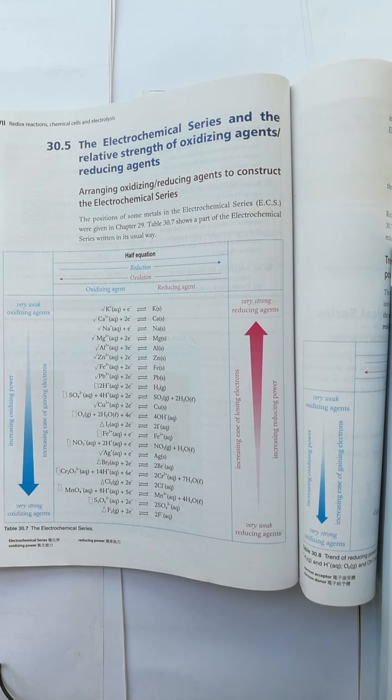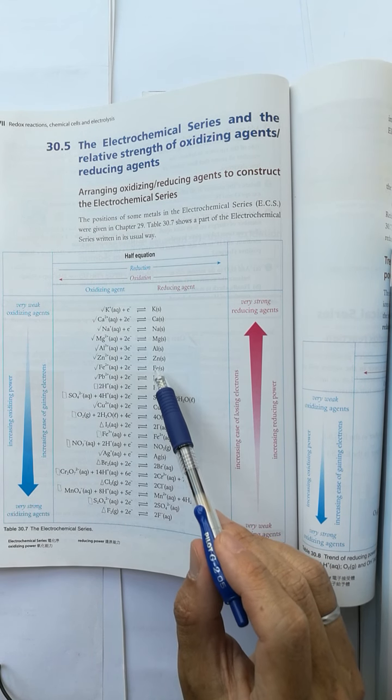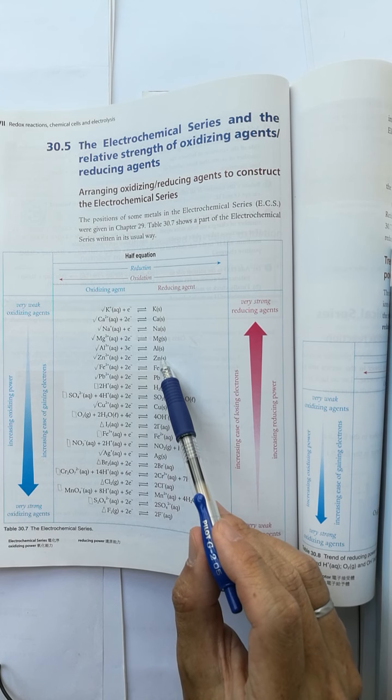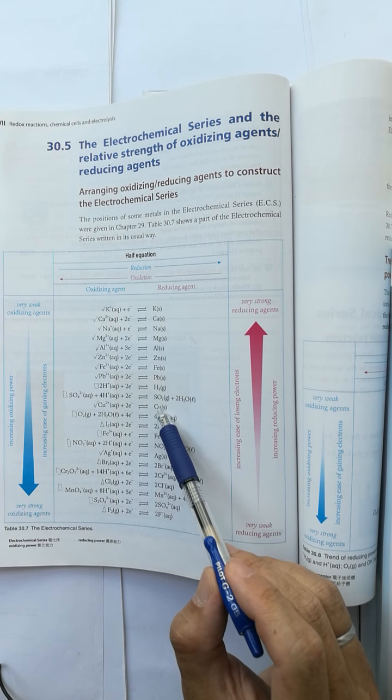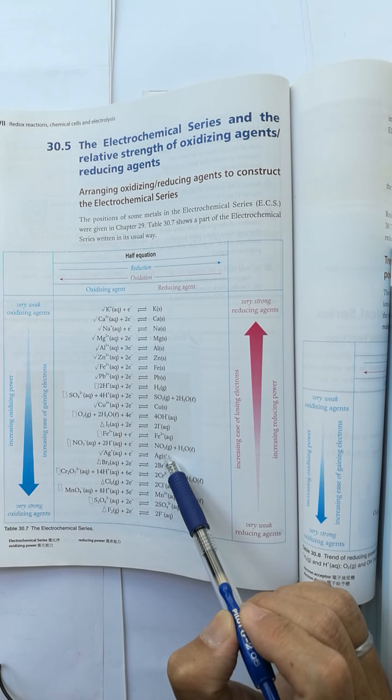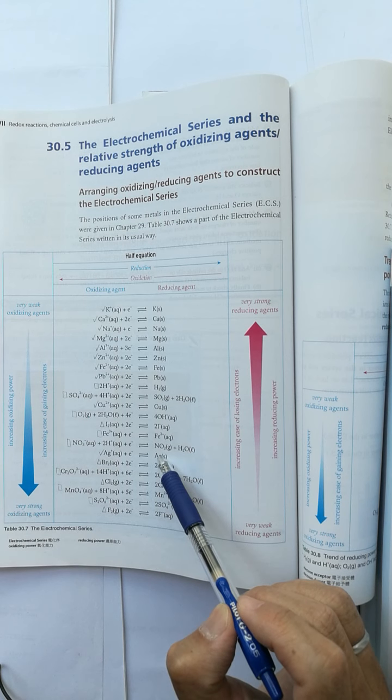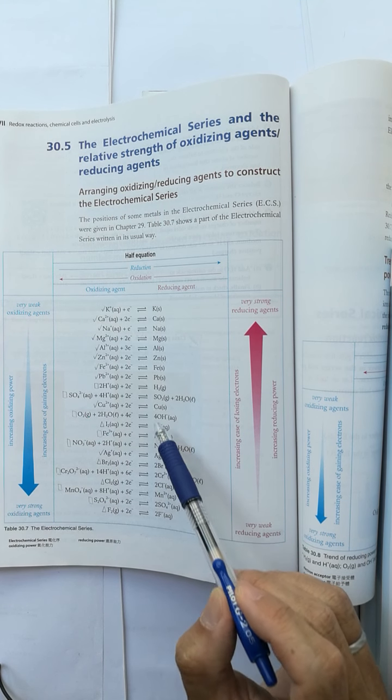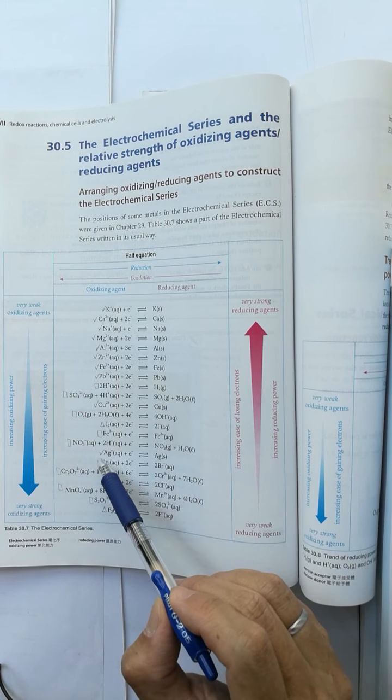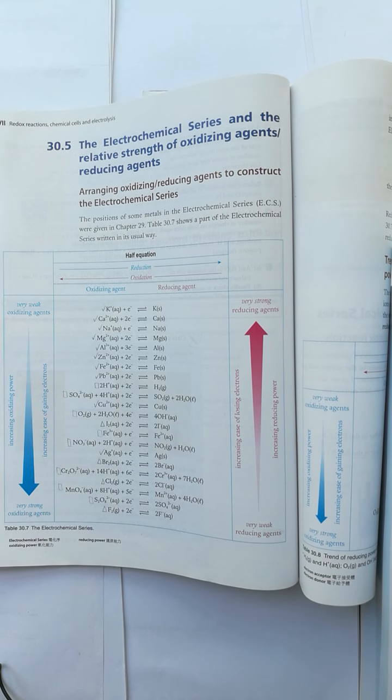We can use zinc or we can use copper and silver. Copper is more reactive than silver and copper displaces silver from the silver ion solution.